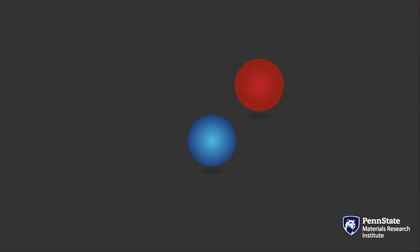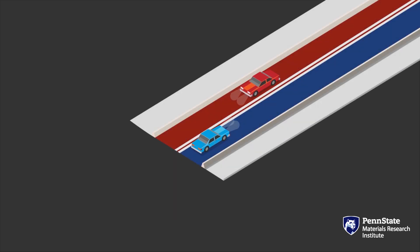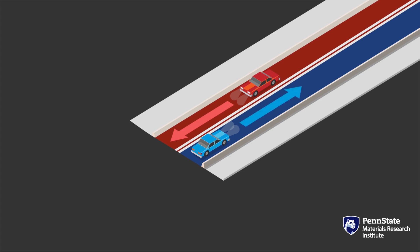Imagine you're in a world where electrons are colored and there are only two colors, red and blue. Think of them as red and blue cars, and your roads are also colored red and blue. So if you're a red car, you drive on the red roads and follow the direction of the red roads. And if you're a blue car, you follow the direction of the blue road.